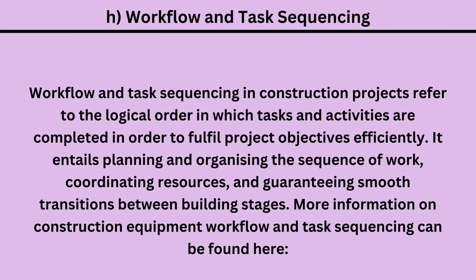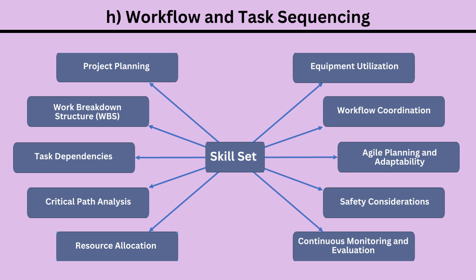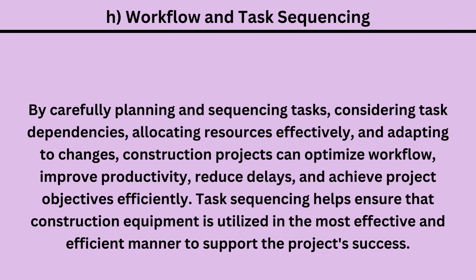More information on construction equipment workflow and task sequencing can be found here: 1. Project Planning, 2. Work Breakdown Structure, 3. Task Dependencies, 4. Critical Path Analysis, 5. Resource Allocation, 6. Equipment Utilization, 7. Workflow Coordination, 8. Agile Planning and Adaptability, 9. Safety Considerations, 10. Continuous Monitoring and Evaluation. By carefully planning and sequencing tasks, considering task dependencies, allocating resources effectively, and adapting to changes, construction projects can optimize workflow, improve productivity, reduce delays, and achieve project objectives efficiently. Task sequencing helps ensure that construction equipment is utilized in the most effective and efficient manner to support the project's success.